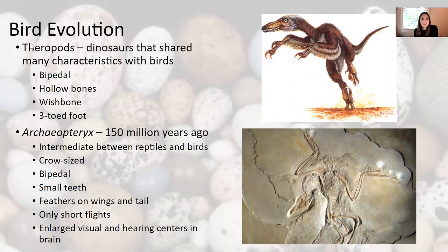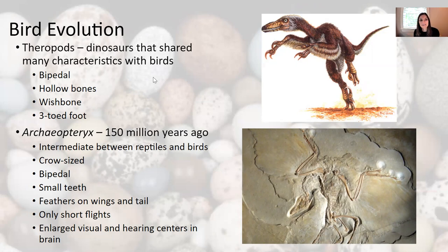Bird evolution starts with theropods, which are dinosaurs that shared many characteristics with birds. We look back to these theropods to see the evolution of our modern birds. Theropods were bipedal dinosaurs that had hollow or strutted, air-pocketed bones like present-day birds. They had a wishbone — a furcula — and they had a three-toed foot.